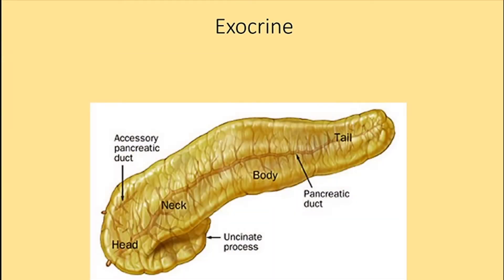Looking at the anatomic structure of the pancreas, tumors are more common in the head, neck, or uncinate process. These are usually smaller and resectable. Tumors in the body and tail are less common, less commonly resectable, and usually present as larger tumors.